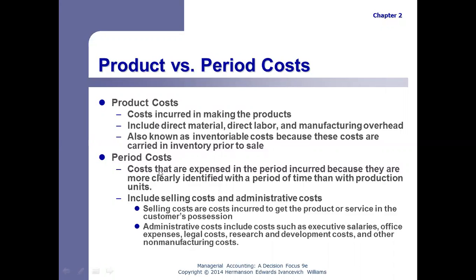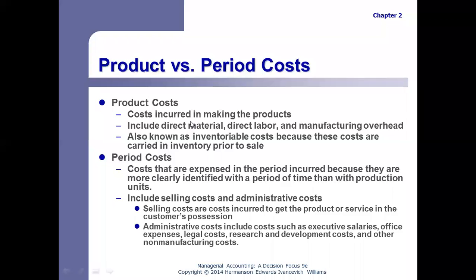The reason we split costs this way is that product costs we keep track of per product — we want to know how much it costs to make a particular product. For period costs, we keep track of those by periods, usually per month. For example, executive salaries and legal fees — how much do we spend per month? We keep track of those kinds of costs for a period of time.